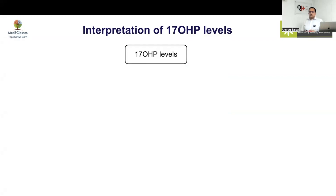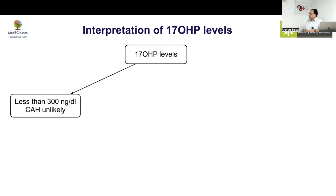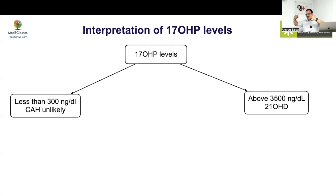When you interpret 17-OHP levels, there are three common units: nanogram per mL, nanogram per dL, and nanomole per liter. The unit I am mainly referring to is nanogram per dL. If the level is less than 300 ng/dL (or 3 ng/mL), CAH is unlikely. Above 3500 ng/dL (or 35 ng/mL), it is most likely going to be present.